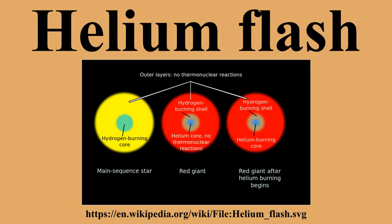In certain binary systems the companion star may have lost most of its hydrogen and donate helium-rich material to the compact star. Note that similar flashes occur on neutron stars.